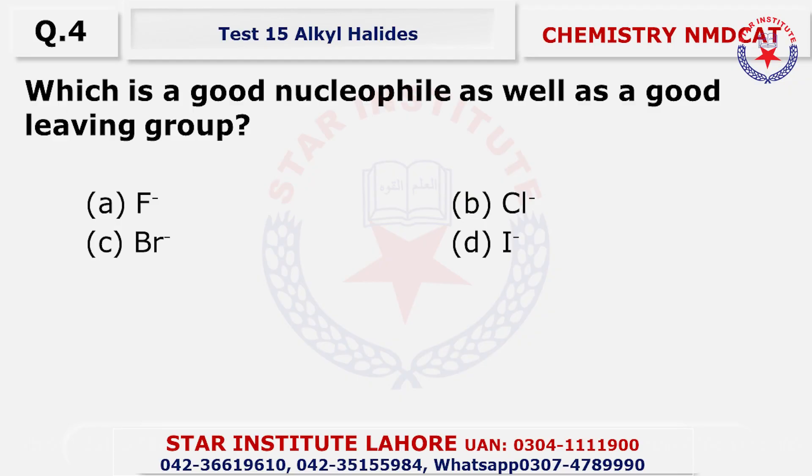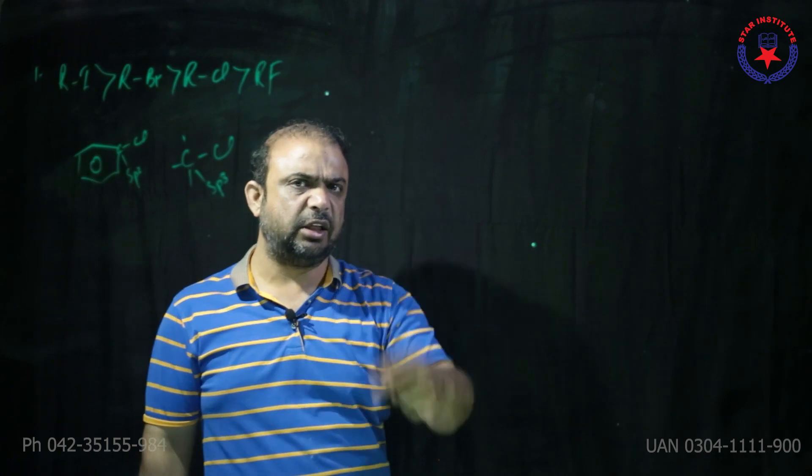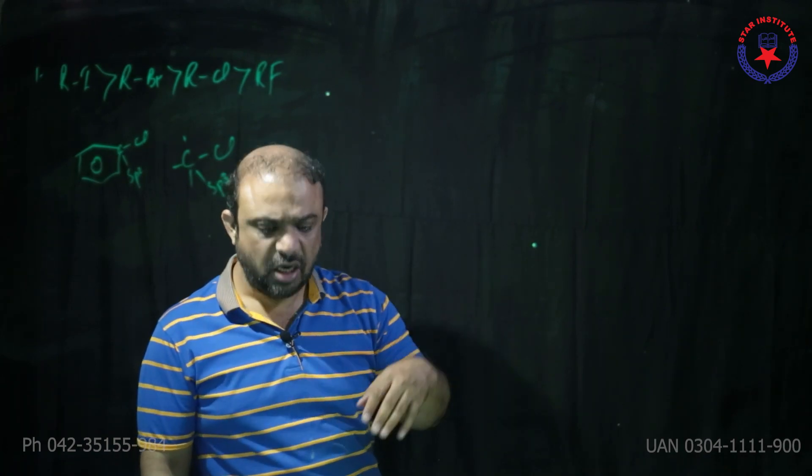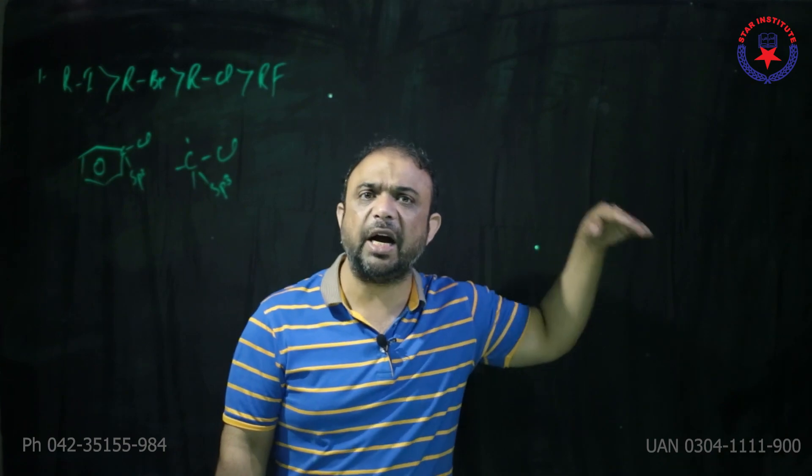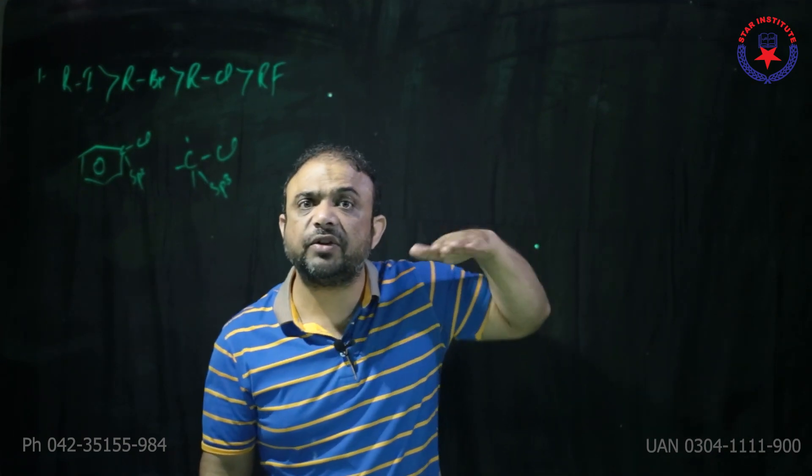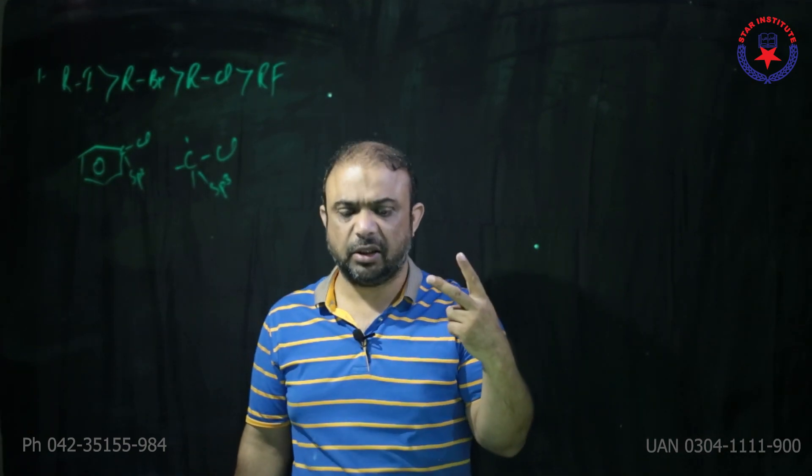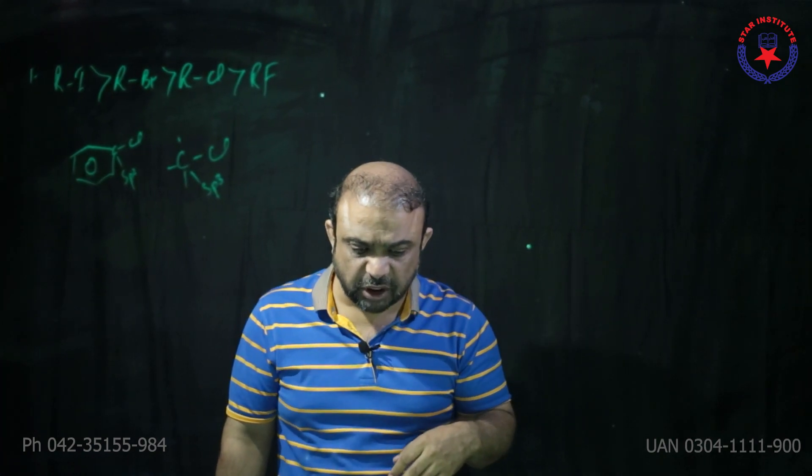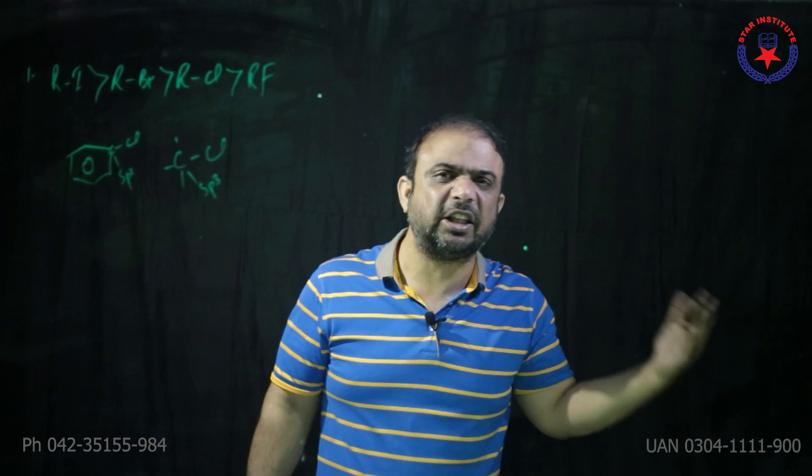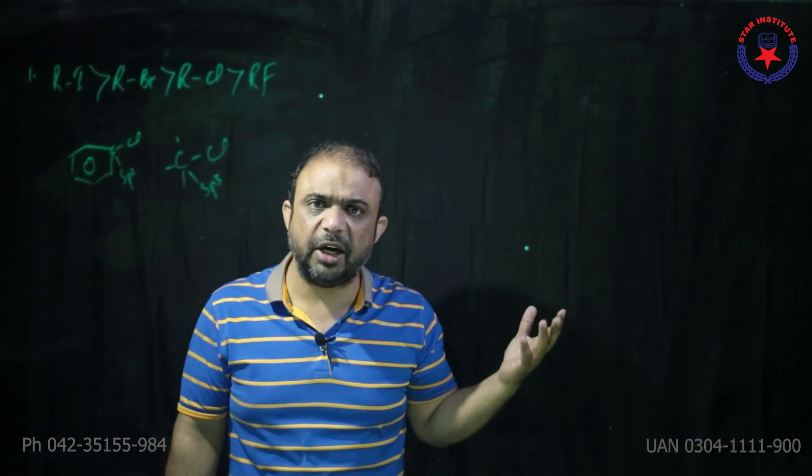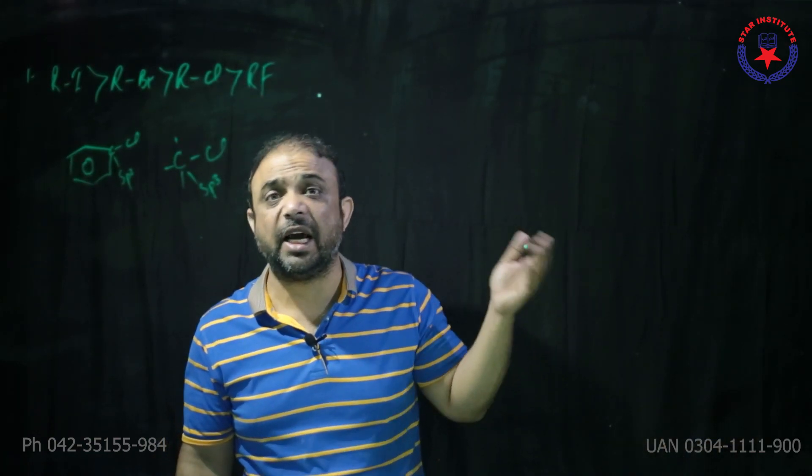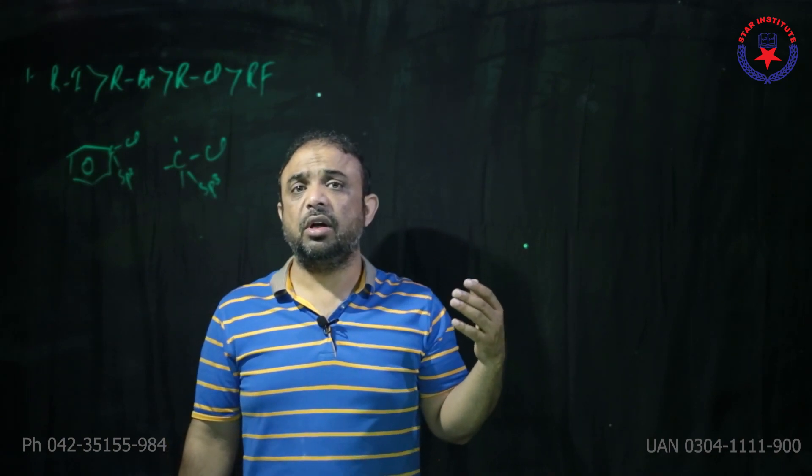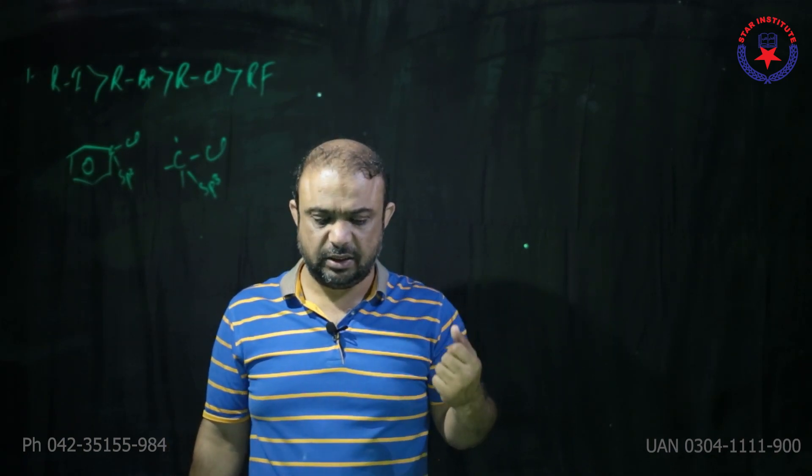Question number four, which is a good nucleophile, as well as a good leaving group. Toh beta nucleophilicity ka, pahla criteria kiya hai, wo hai charge. Ab apni A, B, C, D option ko dekhiye, fluoride, chloride, bromide, iodide hai. In sub par amount of charge same hai. Toh pher dousra factor kiya hai, dousra factor is size. So, jitna size bada hota chala jayega, utni leaving nature achi hoti chali jayegi. So, iodide should be a good nucleophile, because of the negative charge, and a good leaving group, because of the bigger size. So, choice delta.